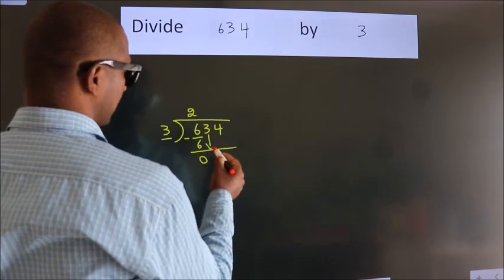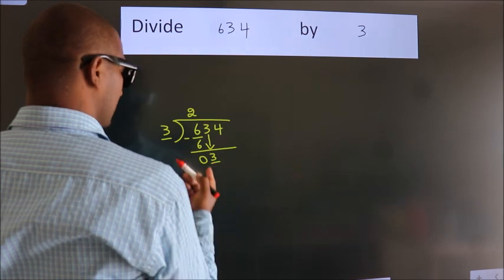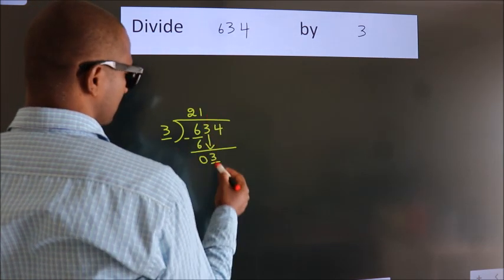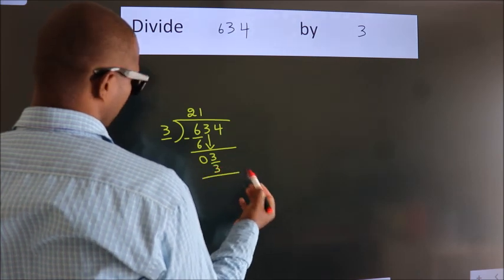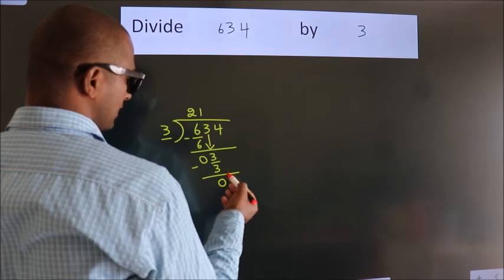After this, bring down the beside number. So, 3 down. When do we get 3? In 3 table, 3 times 1 is 3. Now we subtract, we get 0.